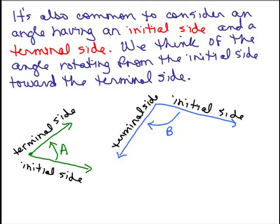Now I'm doing this video because we're getting ready to do some trig, although you don't have to do any trig after doing this video. But it's also common to consider an angle having an initial side and a terminal side. I have this angle A here with an arrow drawing from this ray to that ray. Where it starts I call the initial side, and where it ends is the terminal side.